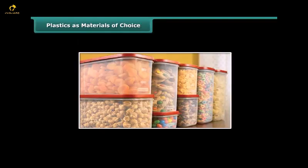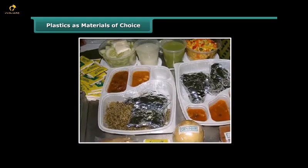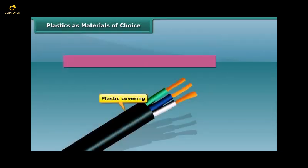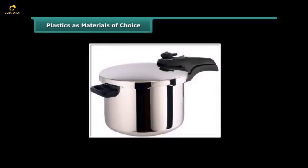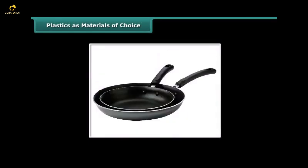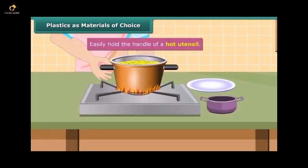Why are plastics so widely in use? Plastic containers are mostly used for the storage of food grains, pickles, salt and spices since these are relatively non-reactive and impermeable to moisture. Since plastic is a poor conductor of electricity, electrical wires have plastic covering. Did you ever notice that utensils used for cooking have plastic handles? Plastics being poor conductors of heat, we can therefore easily hold the handle of a hot utensil.